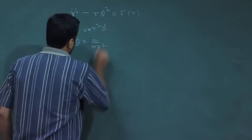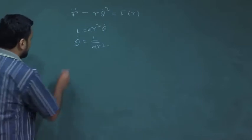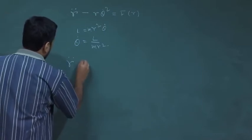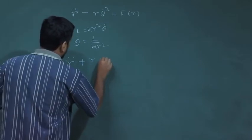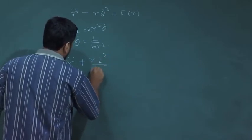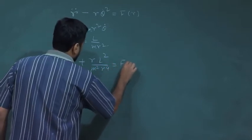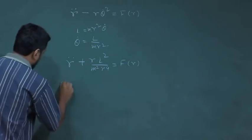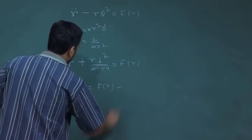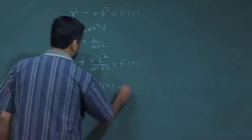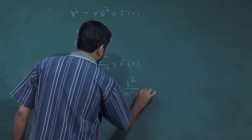If you substitute for this particular term, then we get r̈ + r·L²/(m²r⁴) = f(r), or r̈ = f(r) − L²/(m²r³).